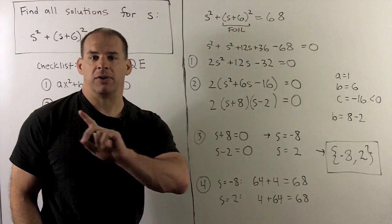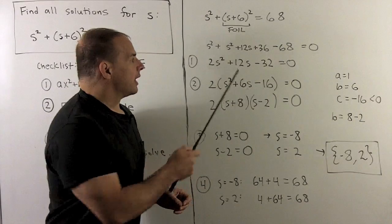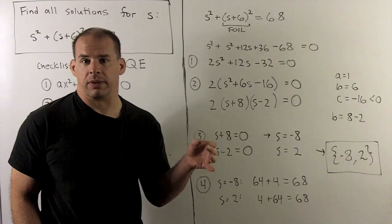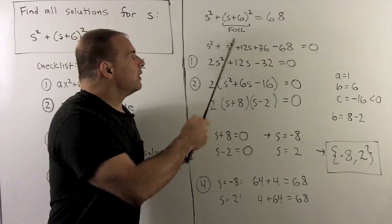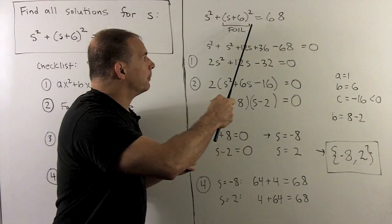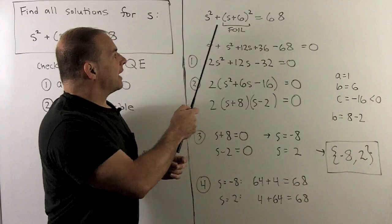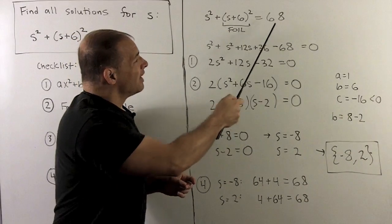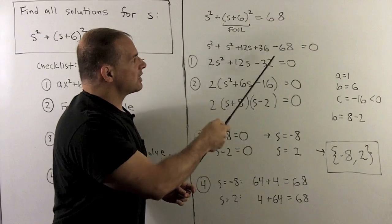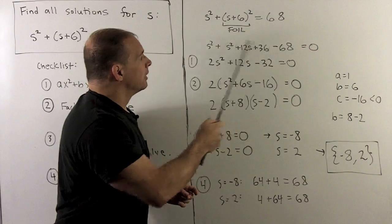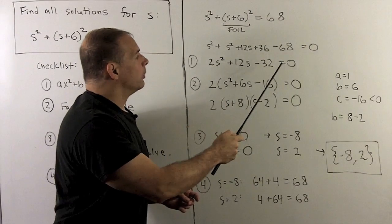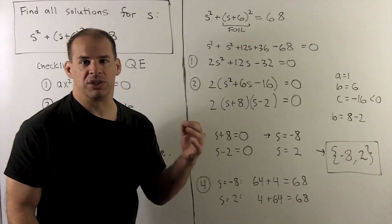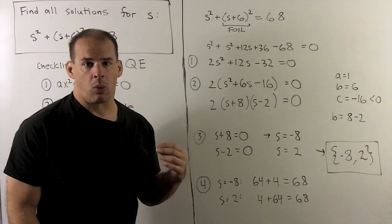So you can either figure that out using FOIL, that'll give S squared plus 12S plus 36, or use the perfect square formula for that. Either way, this is nothing to be frightened of. Now we have S squared plus this term squared. Then the 68, we push to the left-hand side, which gives minus 68, all equal to zero. We simplify and get 2S squared plus 12S minus 32 equals zero. That takes care of part one.